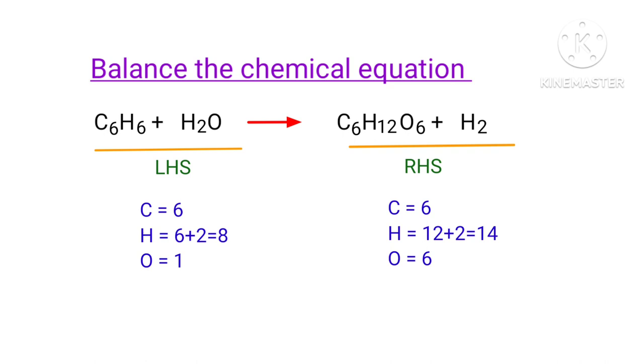The number of atoms are not balanced on both sides. To balance the chemical equation, we need to make use of coefficients. A coefficient is the number that we place in front of a chemical formula.